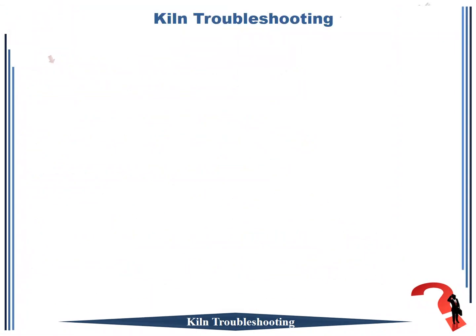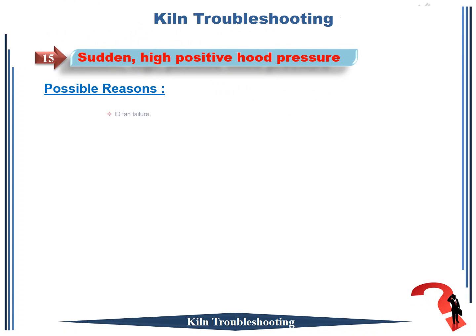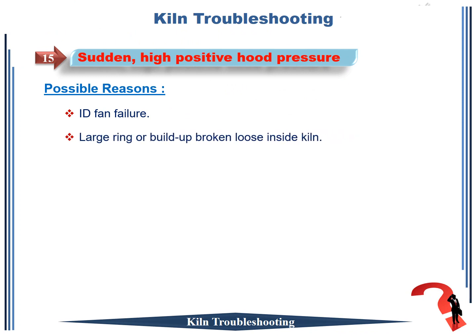Rotary kiln troubleshooting number 15: sudden high positive hood pressure. Possible reasons for this case: 1. ID fan failure; 2. large ring or build-up broken loose inside kiln; 3. instrumentation failure of cooler air flow; 4. steam explosion on wet process kilns.